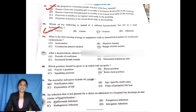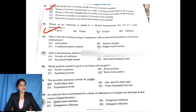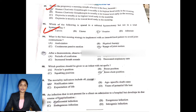What is the best nursing strategy to implement for an immobilized patient to prevent joint contracture? Option D, range of motion exercises, is correct.